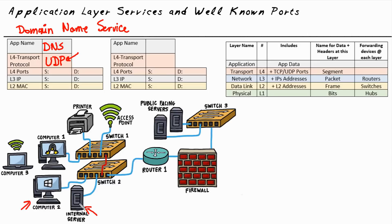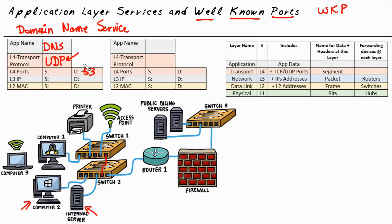A primary way of identifying the service that Bob is asking for is to use what's known as a well-known port, sometimes abbreviated as WKP. For application layer services, a lot of them have a well-known port — a transport layer port associated with them. In the case of DNS, that request when it goes over to the server is not only going to use UDP, but it's also going to have a destination UDP port of 53. At this stage of the game, it's not too important to memorize that DNS uses UDP port 53 as its well-known port, because if we have access to a computer we could easily search that.